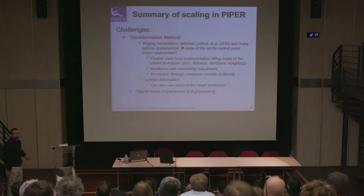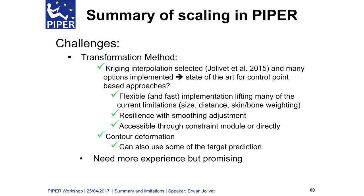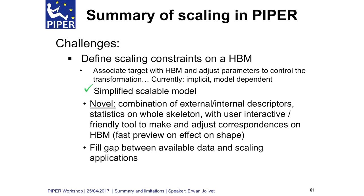We also have another tool to deform the model — the control transformation — which can be used in combination with anthropometric prediction. But we need more experience using this tool in a real-case application to understand what can be done better or what can be removed. It seems promising. Regarding how we can define scaling constraints on a human body model, we can associate targets with the human body model through the style model. We can combine internal constraints using target landmark or anthropometric constraints in an iterative way, providing a friendly tool for the user to make adjustments to the target and fill the gap between data and the transformation method.